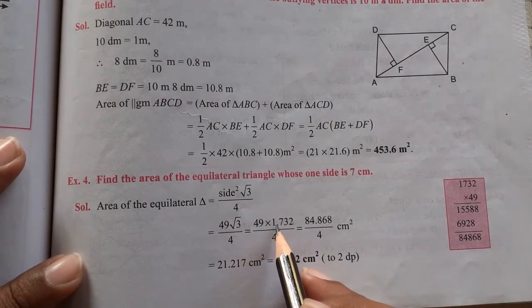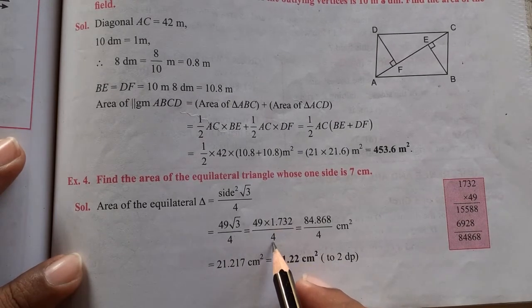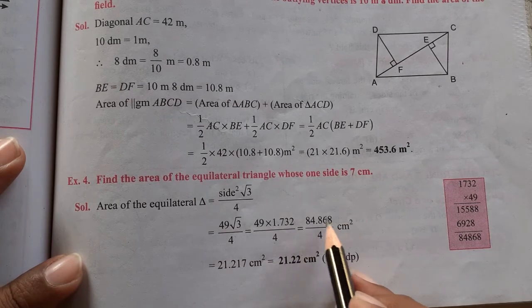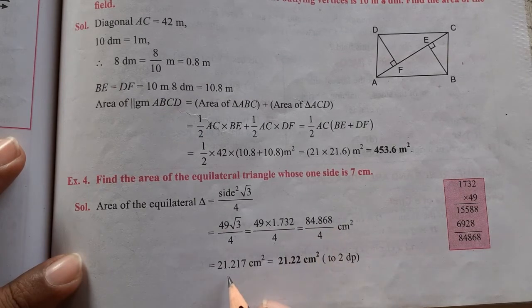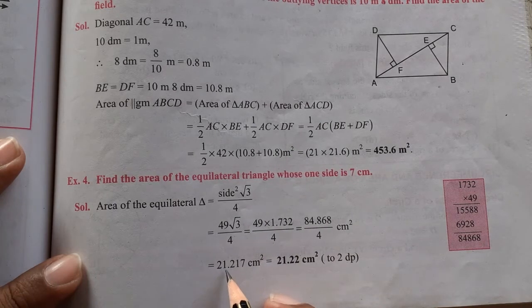That means 49 is to be multiplied by 1.732 and the product is to be divided by 4. So first you can see here that the product is divided by 4. When we solve it, then the answer is 21.217 cm square.